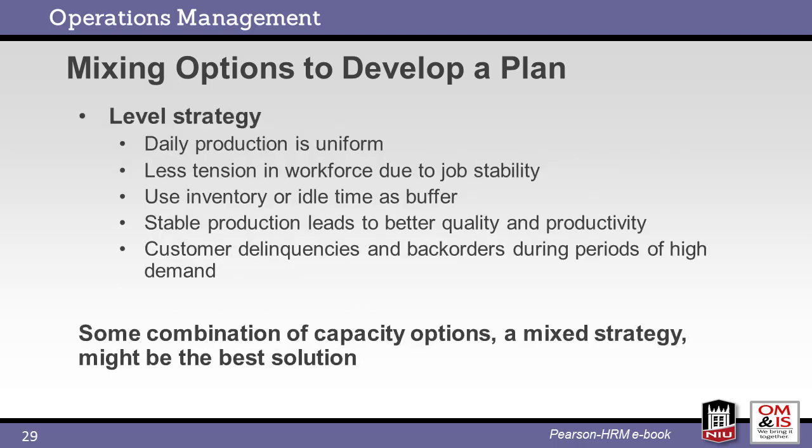Another approach is the level strategy, where production is pre-planned and uniform. This method is best for production management since loading is defined in advance and there are no emergencies, though it may affect customers if demand fluctuates. Toyota typically uses a level strategy for building automobiles. In general, you do not order a new Toyota — you pick one out of the predefined pipeline of vehicles that has not already been spoken for.